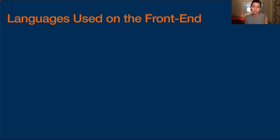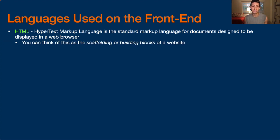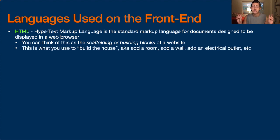So what are some languages used on the front-end? HTML — most people have heard of this. It stands for Hypertext Markup Language, and it is the standard markup language for documents designed to be displayed in a web browser. When you get that code from the server to run in your browser, it's going to be made up of HTML. You can think of this as the scaffolding or building blocks of a website — this is what you use to build the house: add a room, add a wall, add an electrical outlet, etc.